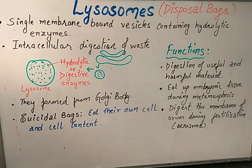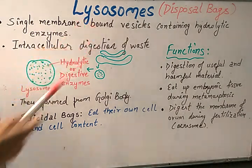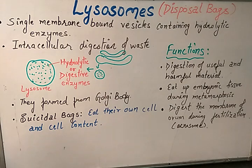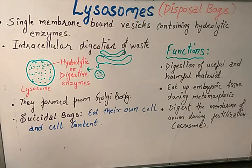Let's start with the next organelle — lysosomes. Lysosomes are also known as disposal bags or waste houses for the cell. They are mainly present in all eukaryotic cells except RBCs. In red blood cells and in prokaryotic cells, lysosomes are not present. They can vary in number within the cell — it's not fixed that each cell has one or two.